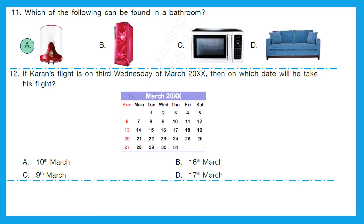Question 12: If Karan's flight is on the 3rd Wednesday of March 20XX, on which date will he take his flight? We have to find from the calendar which date is the 3rd Wednesday. Looking at the Wednesday column: the 1st Wednesday is the 2nd, the 2nd Wednesday is the 9th of March, and the 3rd Wednesday is on the 16th of March. Option B — 16 — is the right answer.